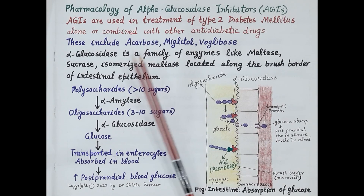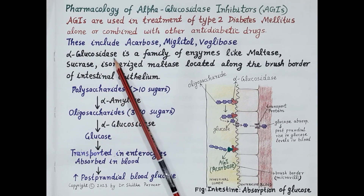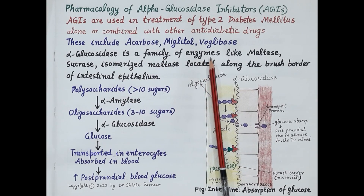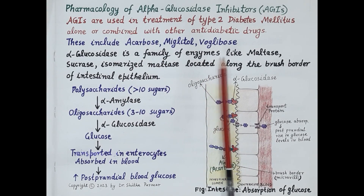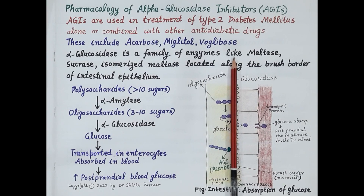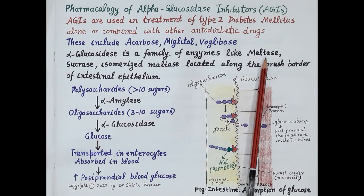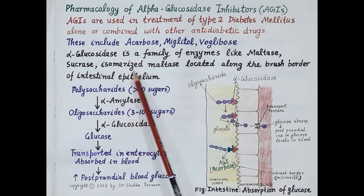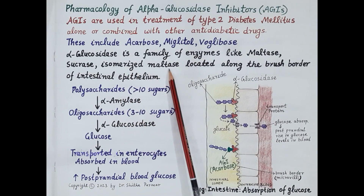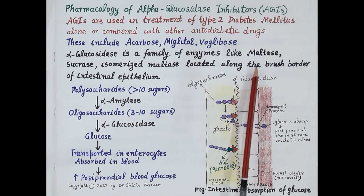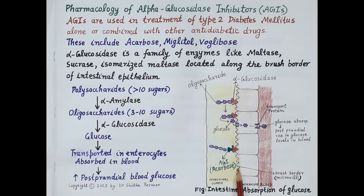Let's first understand what alpha-glucosidase is. Alpha-glucosidase is a family of enzymes that digest carbohydrates. These include enzymes like maltase, sucrase, and isomaltase, located along the brush border of the intestinal epithelium.